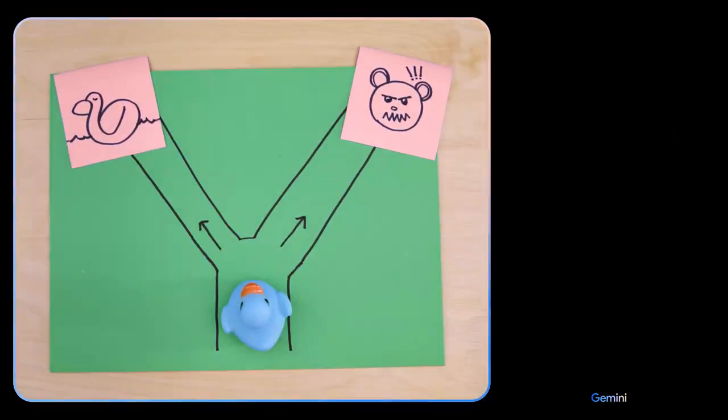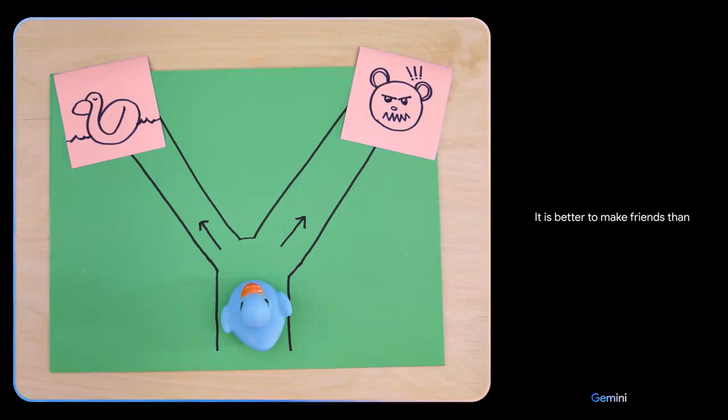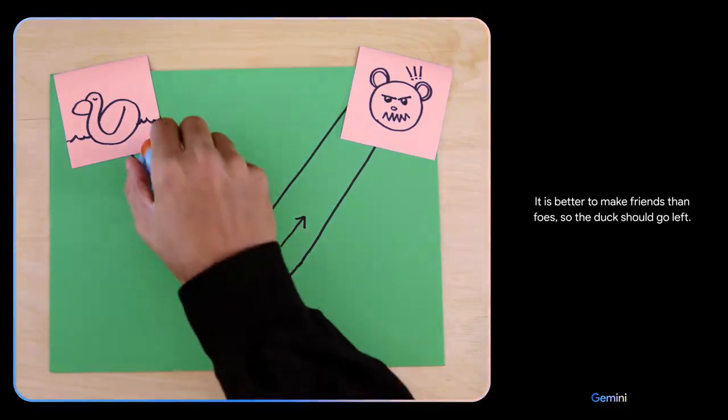Which way should the duck go? Going left leads to a duck, which is a friend. Going right leads to a bear, which is a foe. It is better to make friends than foes, so the duck should go left. Smart choice.